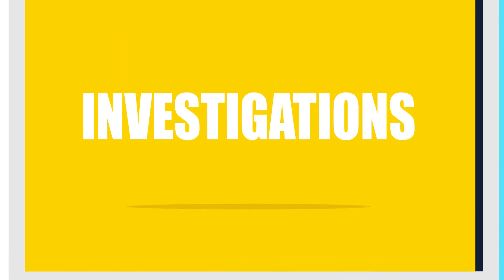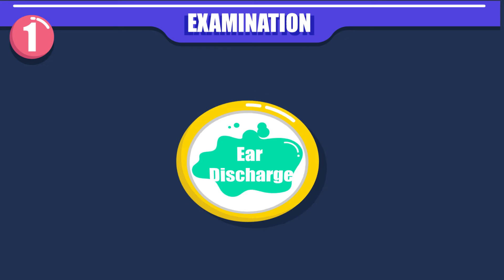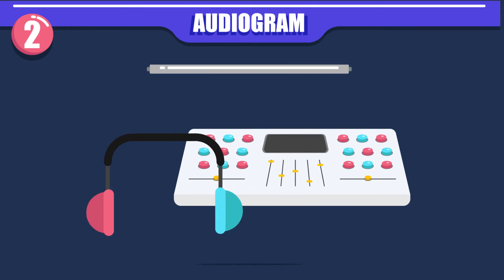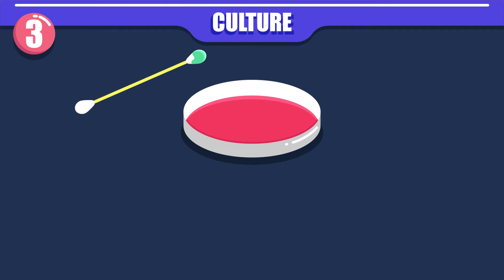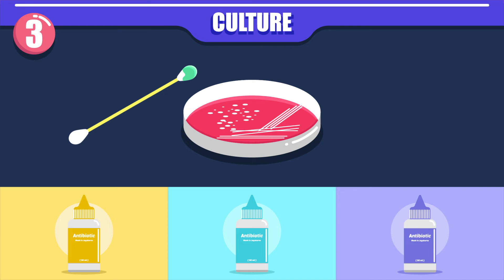Investigations include: examination under microscope; audiogram, which gives an assessment of degree of hearing loss and its type; and culture and sensitivity of ear discharge, which helps to select proper antibiotic ear drops.